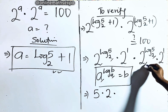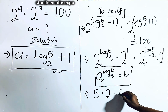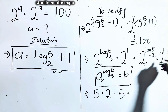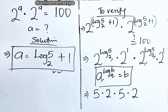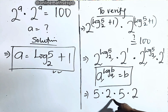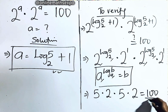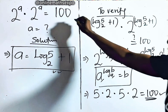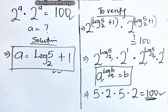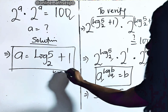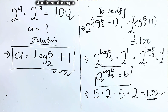Do the same for the second group: this also gives us 5. Now, 2 to the power of 1 is 2, so 5 times 2 gives us 10. And 10 times 5 is 50. 50 times 2 gives us 100. And that is exactly what we have on the right side. So it means the value of a we got is absolutely correct.